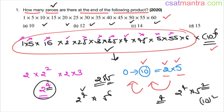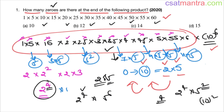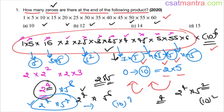Now let's count the 5s: 5 gives one 5; 15 gives one 5; 25 gives two 5s; 35 gives one 5; 45 gives one 5; 55 gives one 5 — that's 1+1+2+1+1+1 = 7, plus 5 itself gives one more, so 5⁸ in total. However, only 5⁴ is needed to form tens, because we have 2⁴. So we have 4 tens from the hidden part.